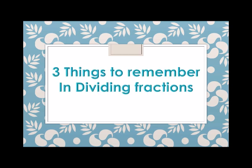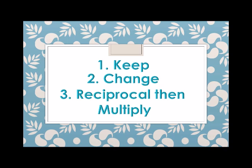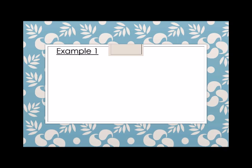Next is division of fractions. We have three things to remember in dividing fractions: first is to keep, then change, and reciprocal, then multiply. Let's see example number one: we have one over seven divided by one-fifth.